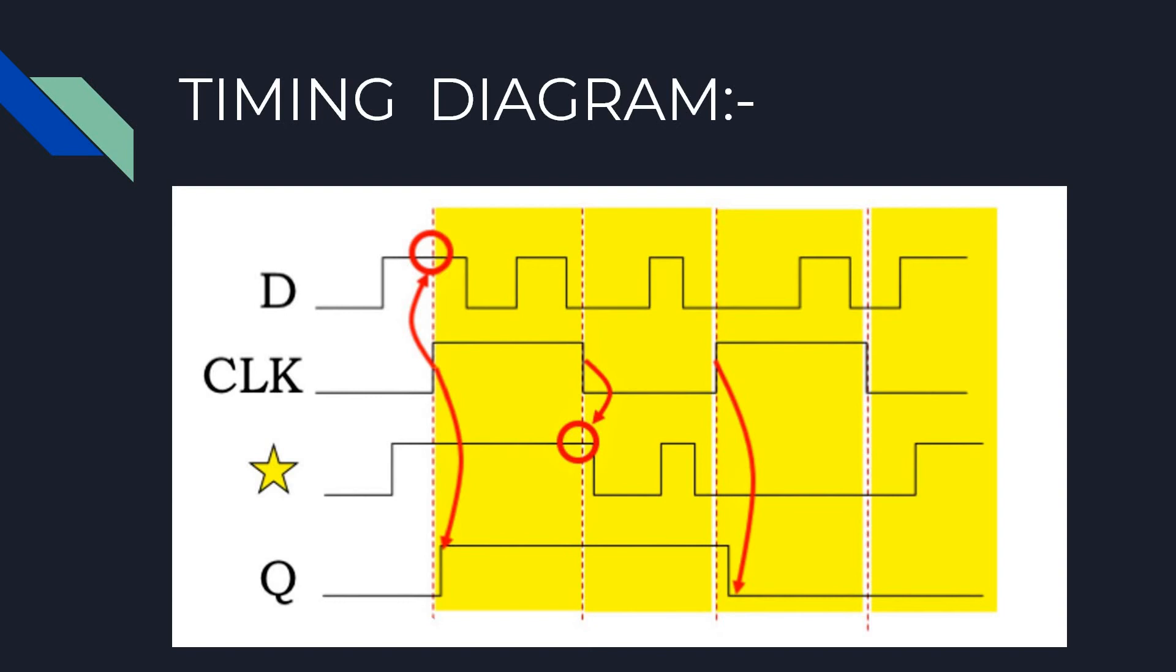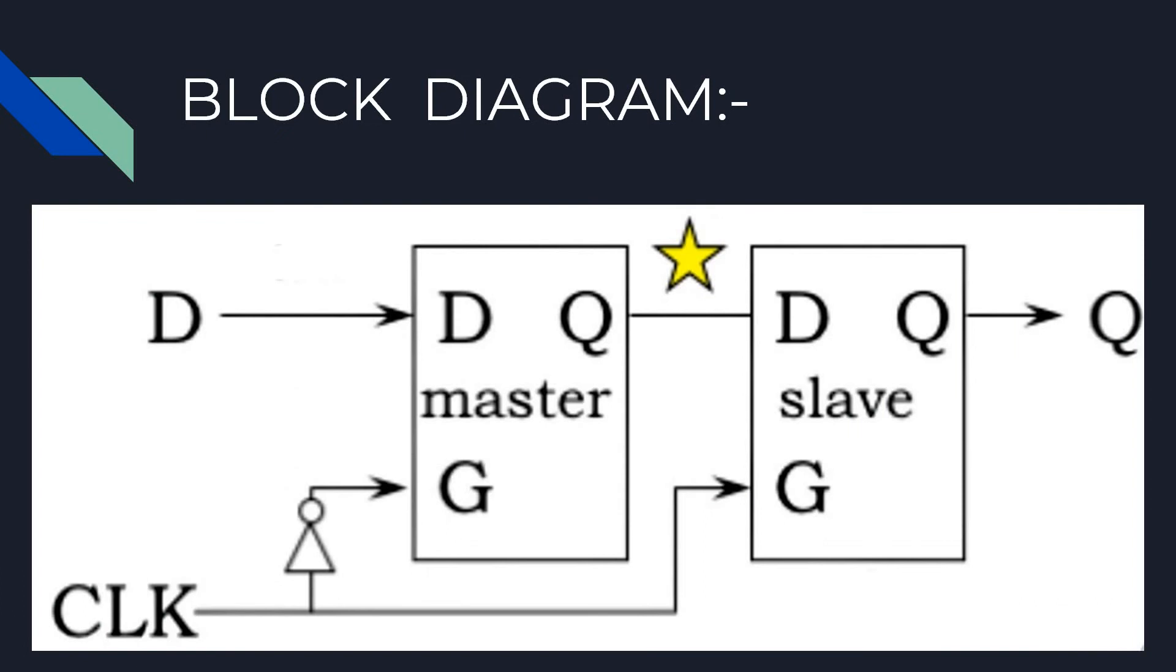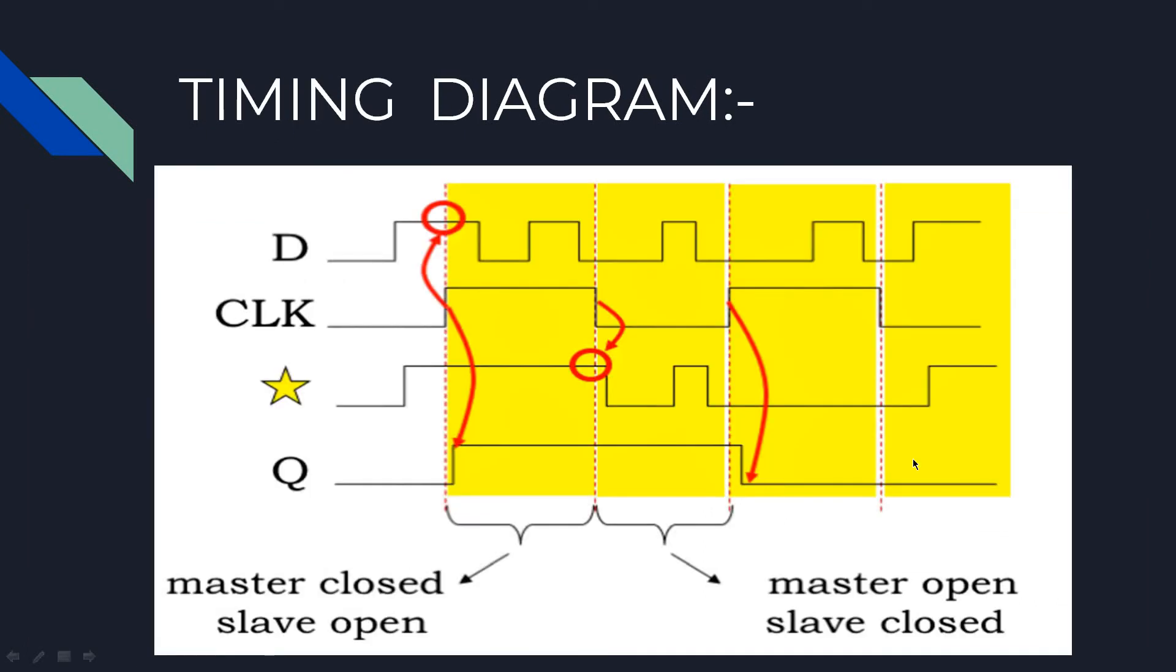Now let's figure out what slave is doing. Its output signal which also serves as the output of D register is shown as the bottom waveform.